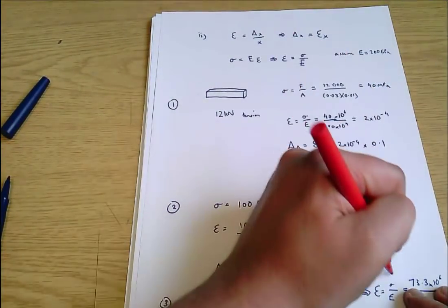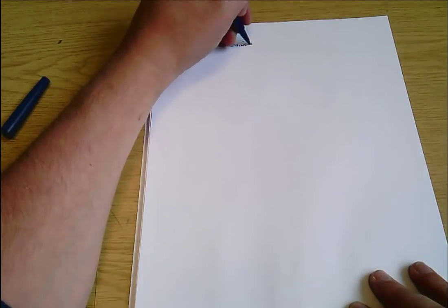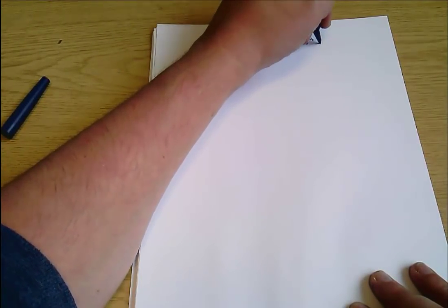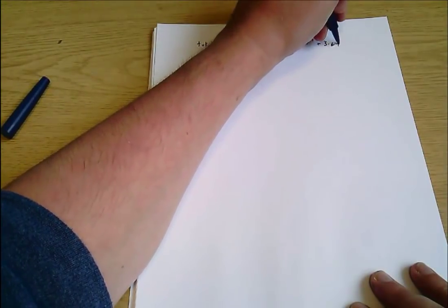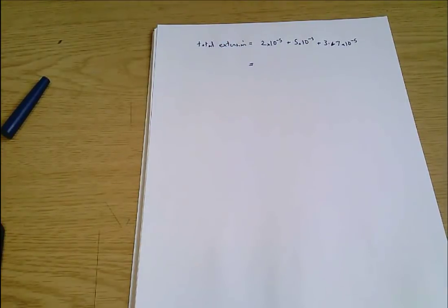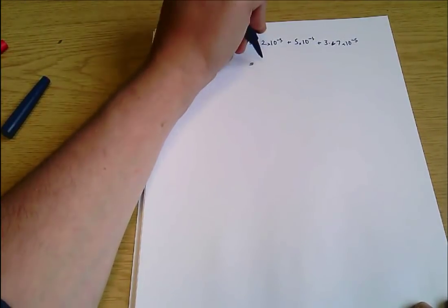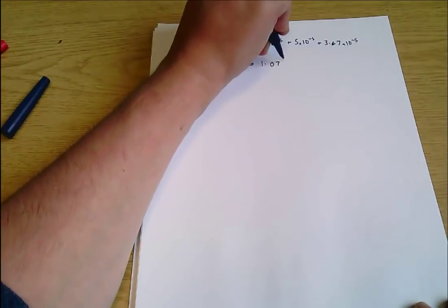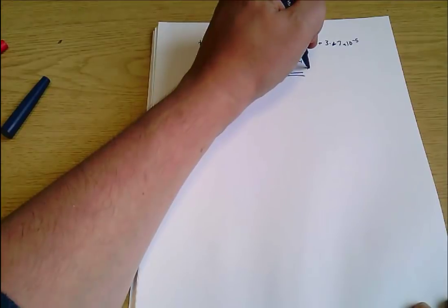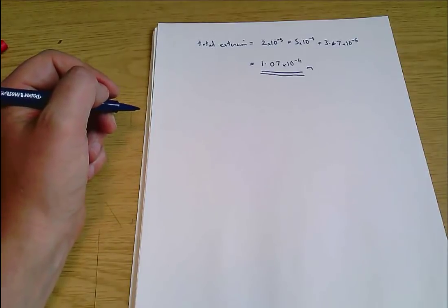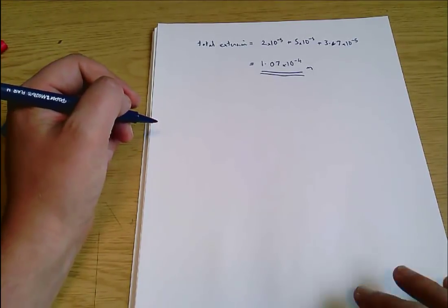We've got three extensions. The total extension equals 2 times 10⁻⁵ plus 5 times 10⁻⁵ plus 3.67 times 10⁻⁵, which is 10.67 times 10⁻⁵, or about 1.07 times 10⁻⁴ metres. That's the answer based on the assumed Young's modulus — I couldn't find it stated in the question, which I think might be a typo.